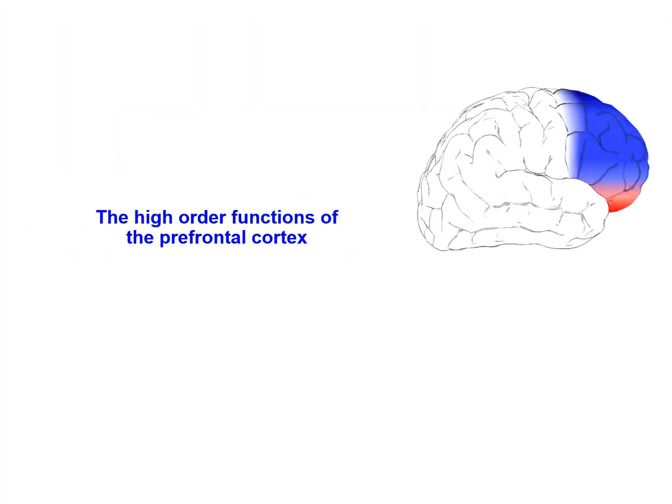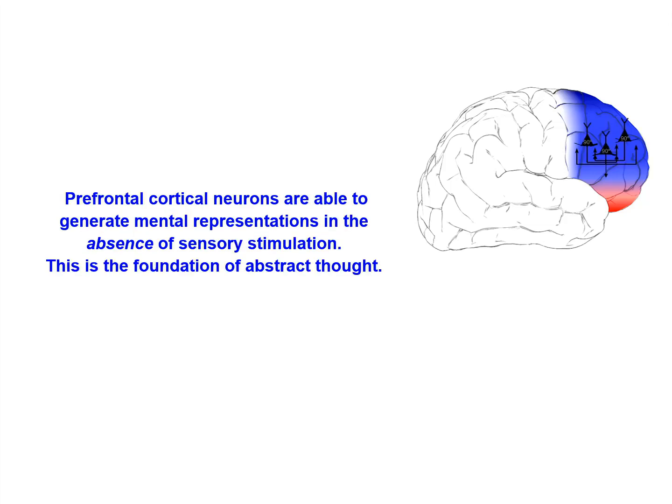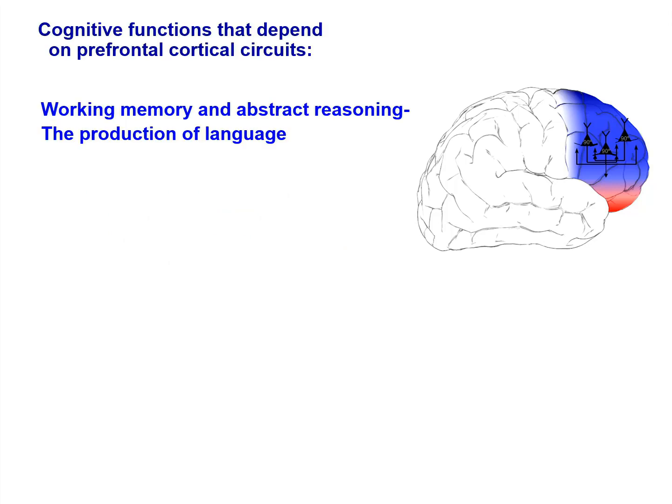Now let's look at the fascinating functions of the prefrontal cortex. Prefrontal circuits have the remarkable ability to generate mental representations — they can represent information without any sensory stimulation. This ability to think about something that isn't actually happening is the foundation of abstract thought. This fundamental ability is the building block for many cognitive functions: it allows us abstract reasoning and working memory, which is often called our mental sketch pad, and it allows us to have language, as words are symbolic representations of information.